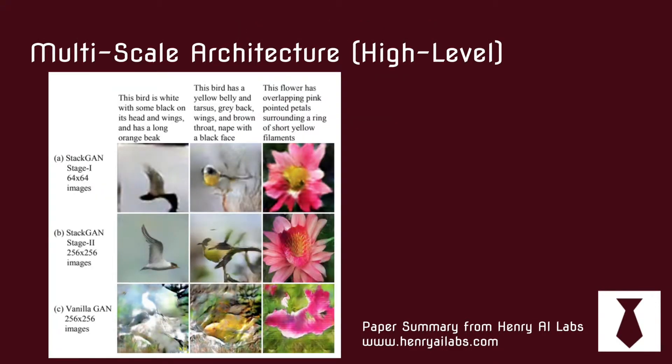There are two main ideas in the StackGAN paper. The first main idea is the multi-scale architecture. From a high level, what this does is first the GAN model produces 64x64 images and then takes that as a conditional input to generate 256x256. The idea is that it breaks up the problem of generating a high resolution image into a more tractable sub-problem — it's easier to get to 64x64 than to 256x256, and it's easier to start from 64x64 than from a random vector.